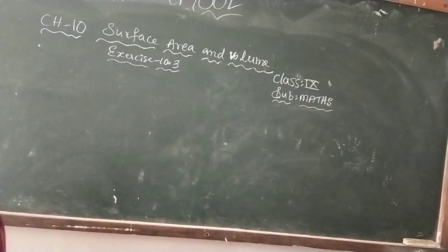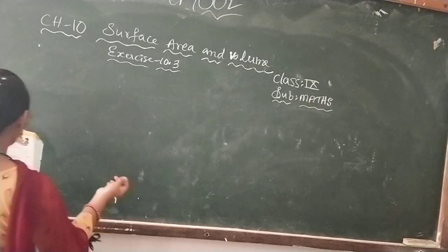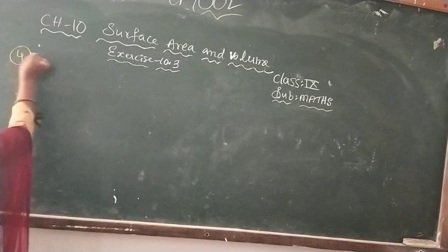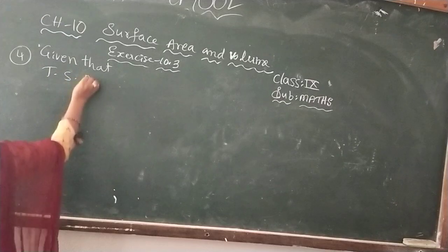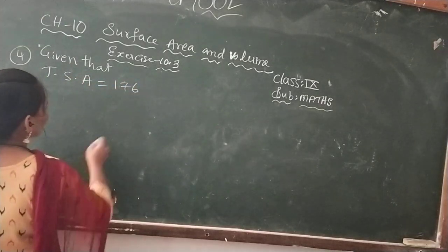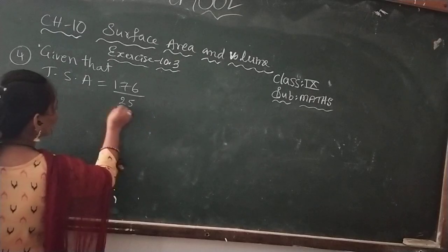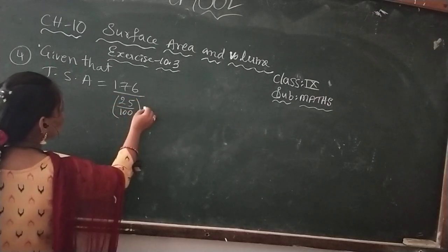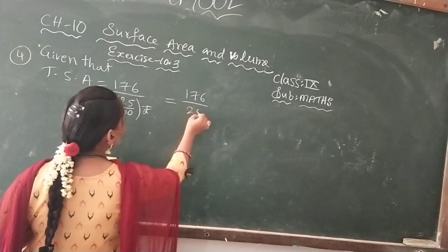Here cost of painting the total surface area at 25 paise per cm² is Rs.176. First, given information, what is given in the question? Total surface area of a cone.